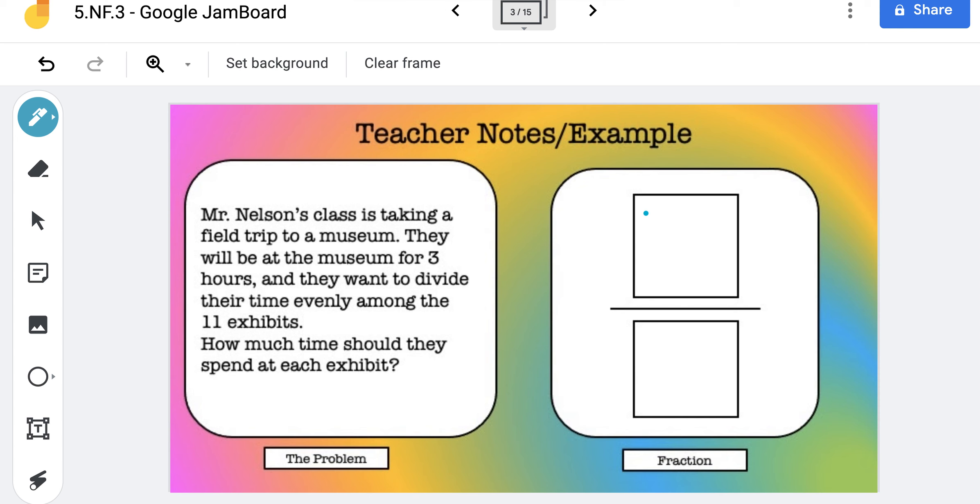Okay, so we know they're gonna be at the museum for three hours, and they're gonna divide that into 11 different sections. So that means the three is gonna be in the numerator, and then the 11 is gonna be in the denominator. So the three represents the three hours they're gonna be there, and they're gonna divide that into 11 different sections. So the fraction is gonna be 3/11.